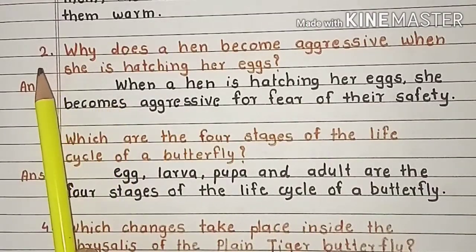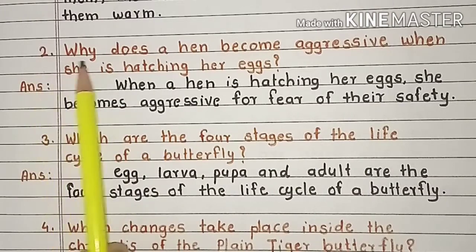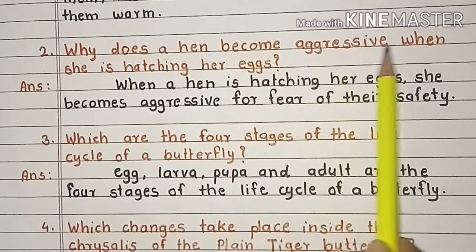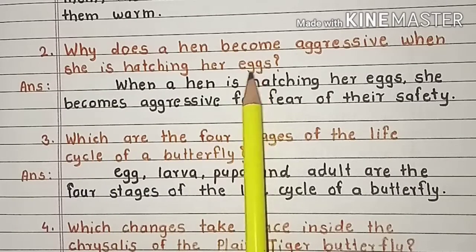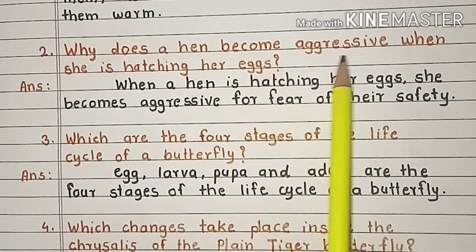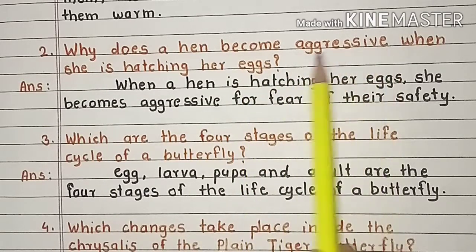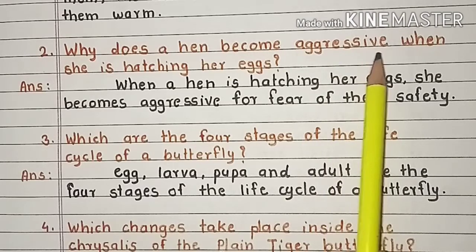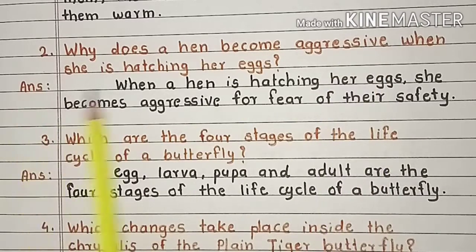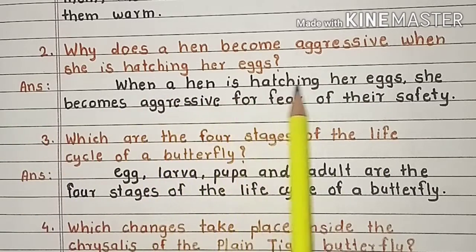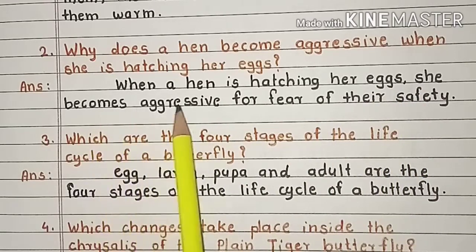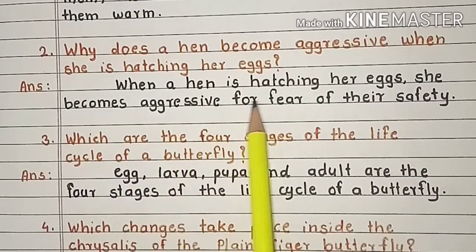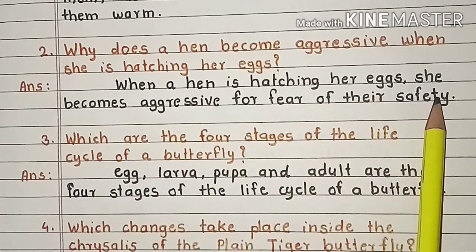Question 2. Why does a hen become aggressive when she is hatching her eggs? Andeo bata stana komdi akramak ka hoote? Aggressive manje akramak. Answer. When a hen is hatching her eggs, she becomes aggressive for fear of their safety.